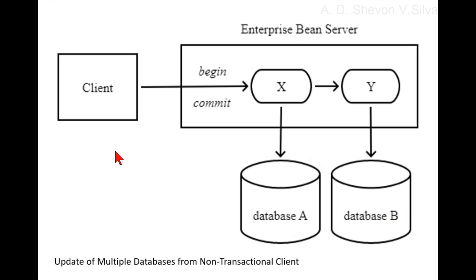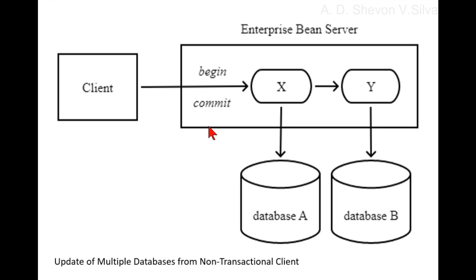Whenever a client invokes a method on an enterprise bean's business interface, on the bean's no-interface view, on a home or component interface, or a message listener method, the container interposes on the method invocation. This interposition allows the container to control transaction demarcation declaratively through transaction attributes set by the developer. For example, a session bean method is configured with the Required transaction attribute.